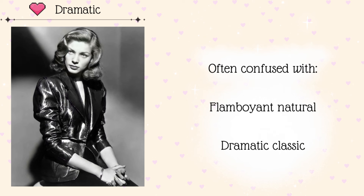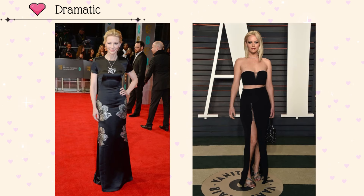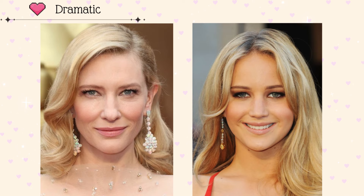For the last part of the video we have some comparisons with image identities that Dramatic is often confused with — usually Flamboyant Natural and Dramatic Classic. Here we have Cate Blanchett on the left and Jennifer Lawrence, a verified Flamboyant Natural, on the right. Both are elongated, but Dramatics are narrower and sharper. Flamboyant Naturals tend to look softer because they have a blunt yang, also called soft yang. Cate is sharper while Jennifer is softer and more blunt. Another big difference is essence: Cate has a more striking and commanding essence, while Jennifer has more of a cool-girl but still approachable energy.